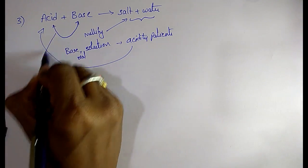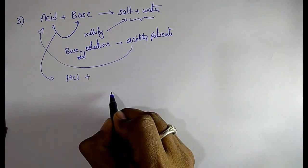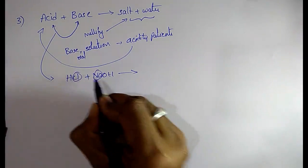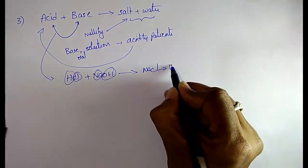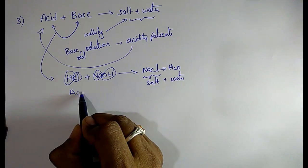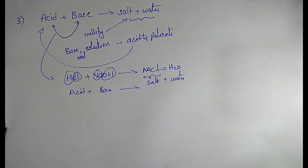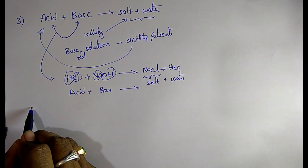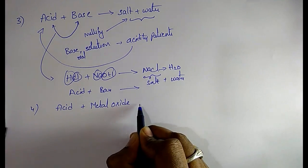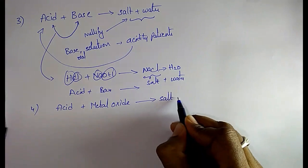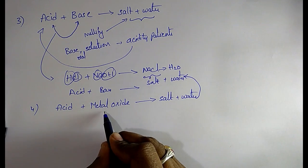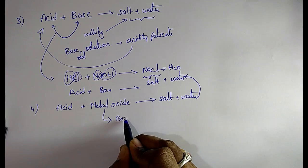For example, if you take HCl and base NaOH, you get NaCl plus H2O — that is salt plus water. Whenever acid combines with base, we get salt and water. Another important property: whenever acid combines with metal oxide, they also release salt and water — same as acid plus base. So metal oxide can be considered as a base.